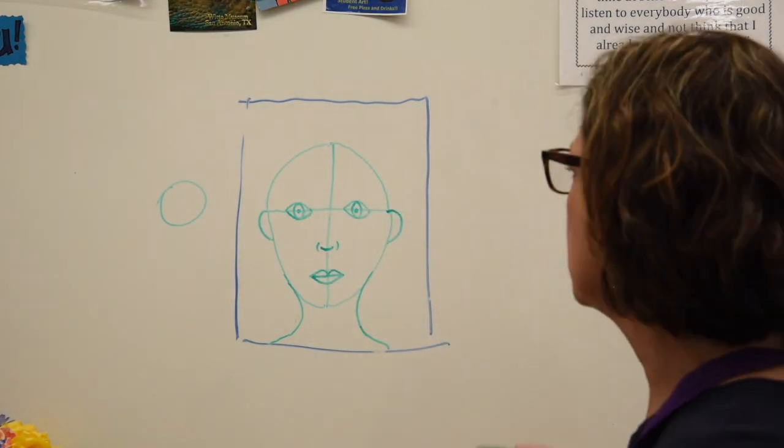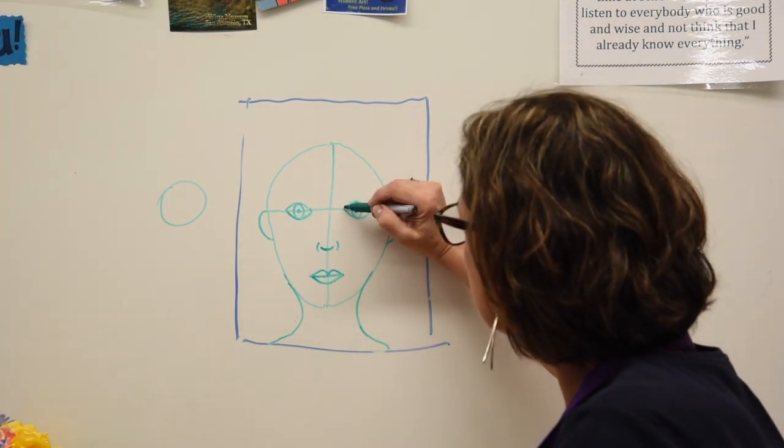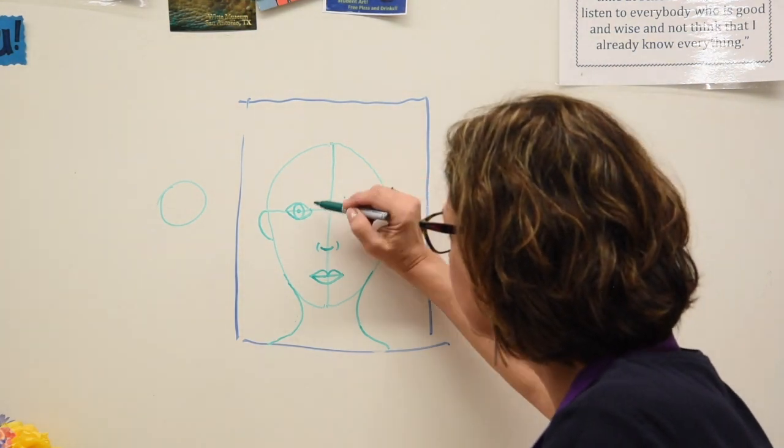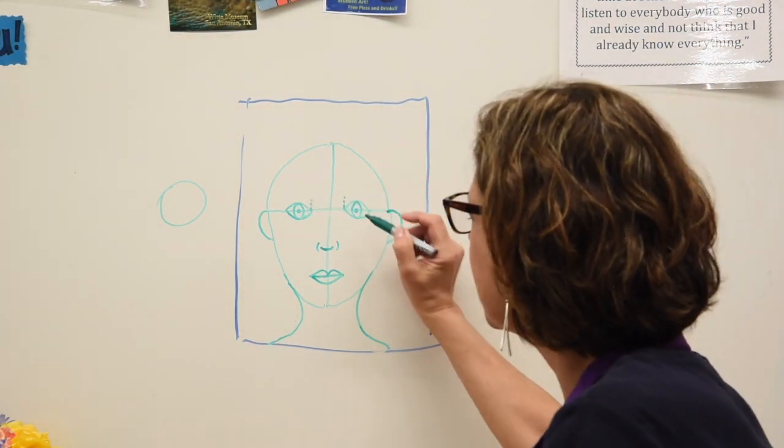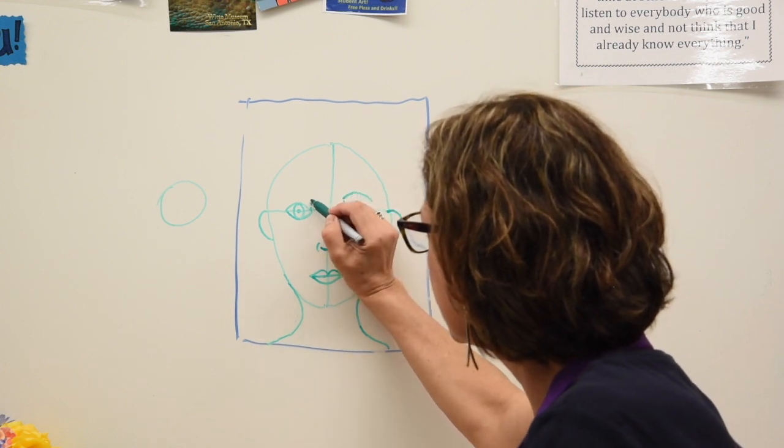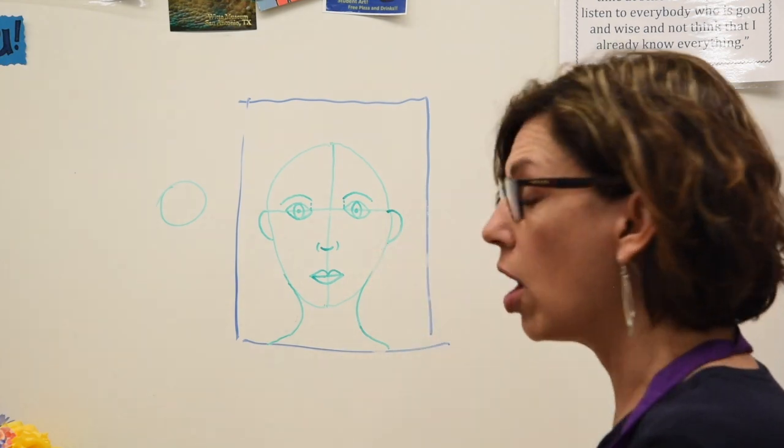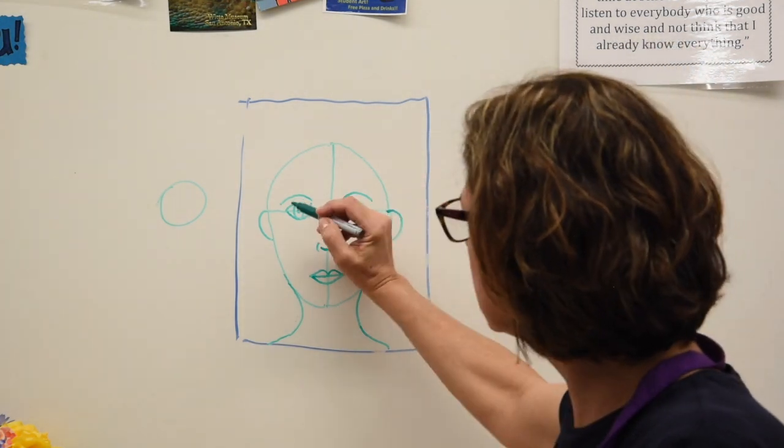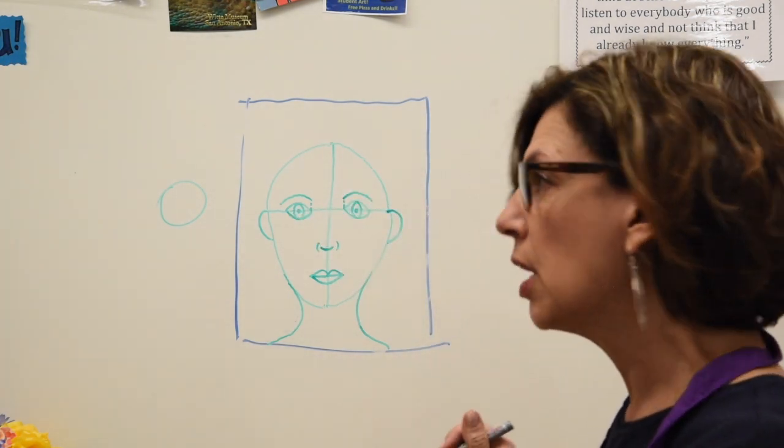We are going to do the eyebrows next. Remember, imagine a little imaginary line here. And that is how you know where to start it. So you are going to start here, curve it out, here, curve it out. Go all the way out to the end, shape of the eye.